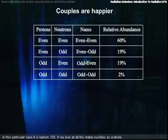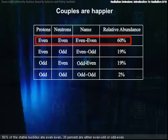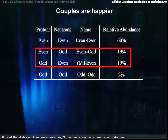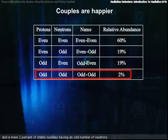If we look at all the stable nuclides as a whole, 60% of the stable nuclides are even-even, 38% are either even-odd or odd-even, and a mere 2% of stable nuclides having an odd number of neutrons and an odd number of protons are stable. And these are at such low Z that the nuclides have no choice. If you will, they're forced to be odd-odd, and there's just not room to maneuver.